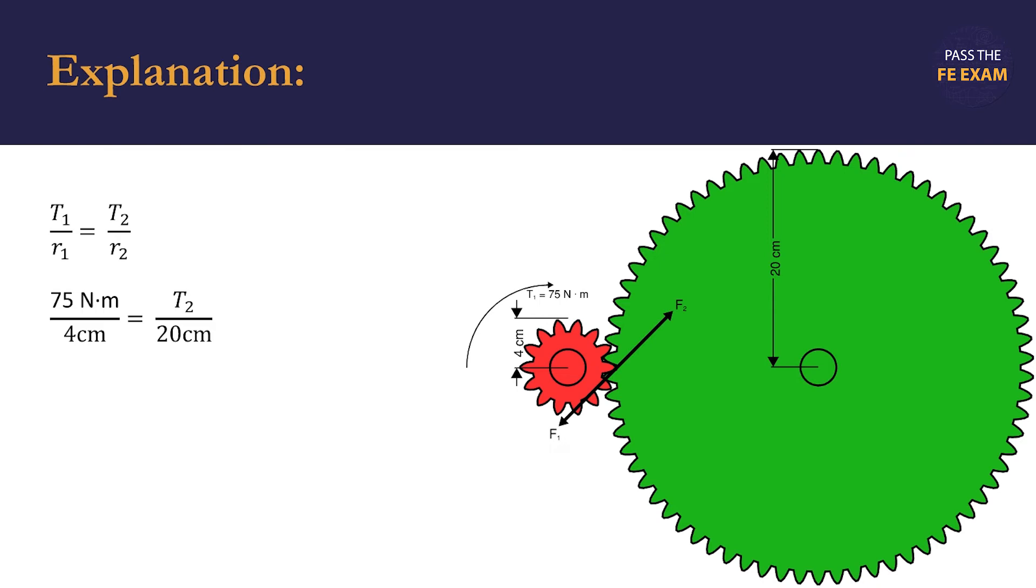We substitute 4 centimeters into the radius of the smaller gear, and 20 centimeters into the radius of the larger gear, leaving T2. When we solve for T2, we find that it equals 375 newton meters.